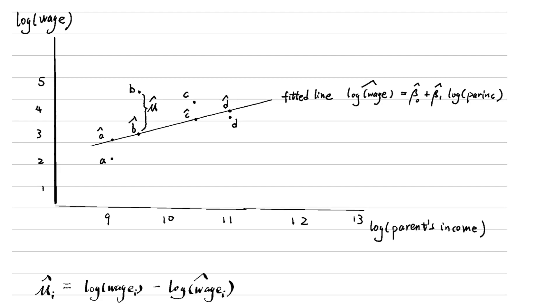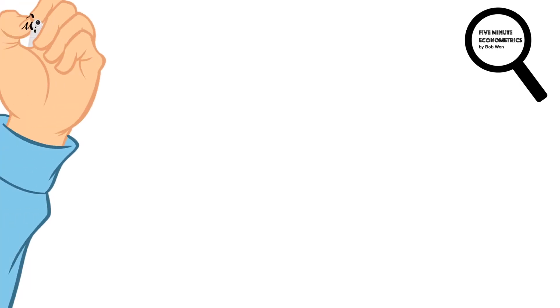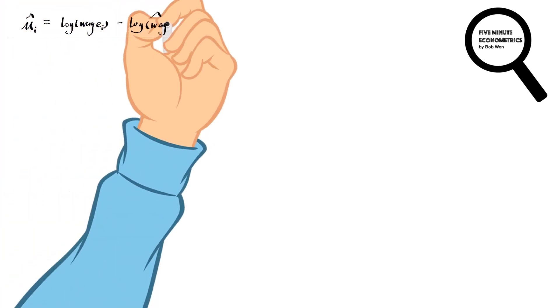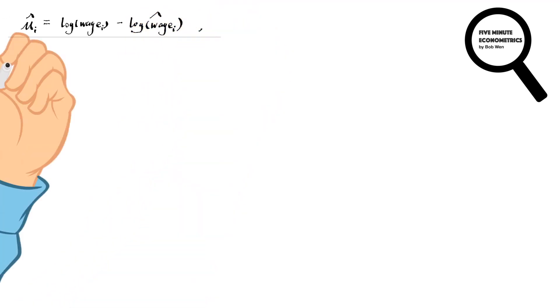For our example, for each parent's income, there is an actual value of the worker's wage and a fitted value. How do we estimate the fitted line? That is to say, how to estimate the intercept and the slope coefficients?